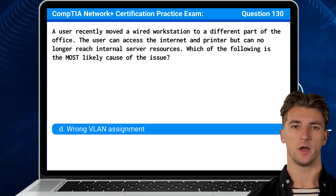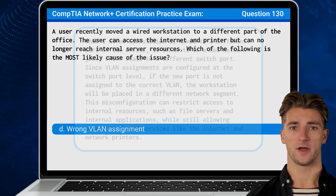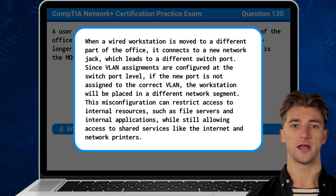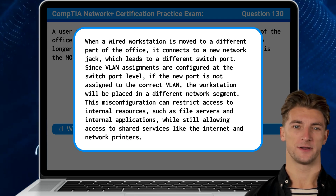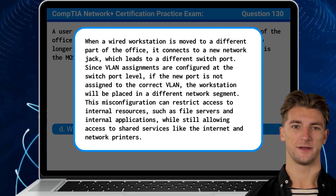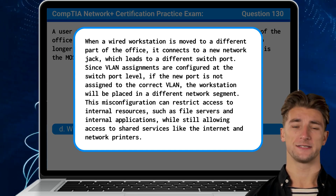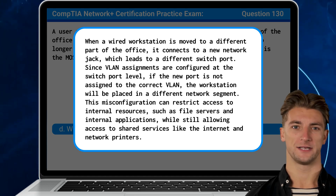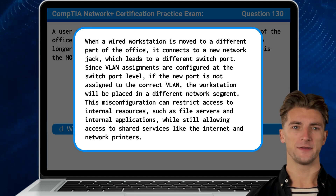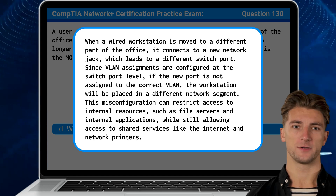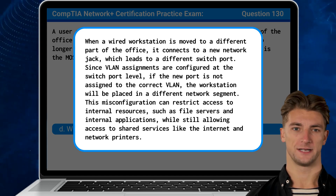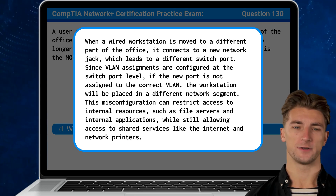The answer is D — Wrong VLAN assignment. When a wired workstation is moved to a different part of the office, it connects to a new network jack, which leads to a different switch port. Since VLAN assignments are configured at the switch port level, if the new port is not assigned to the correct VLAN, the workstation will be placed in a different network segment. This misconfiguration can restrict access to internal resources, such as file servers and internal applications, while still allowing access to shared services like the internet and network printers.